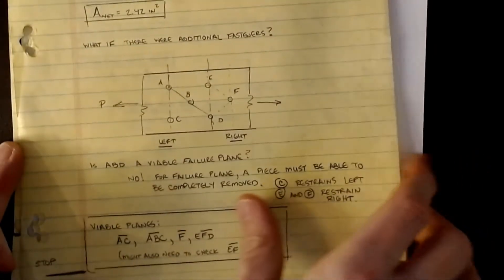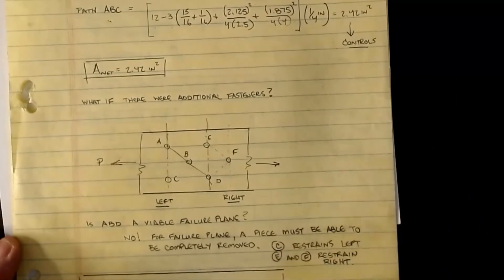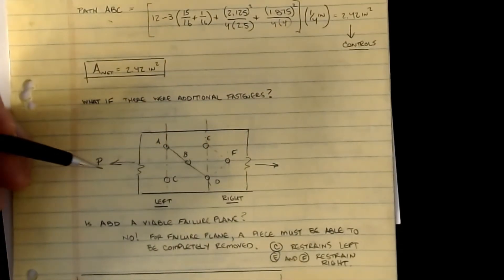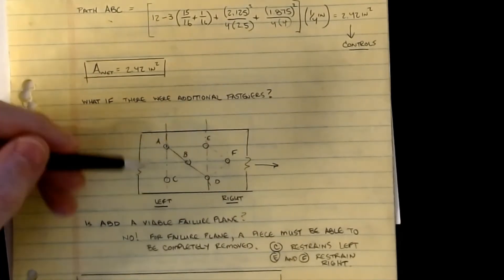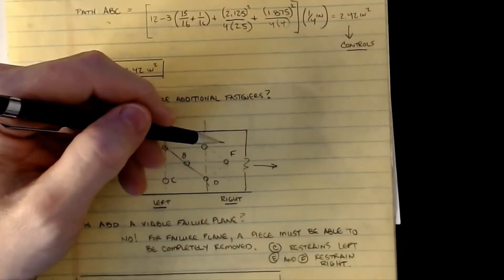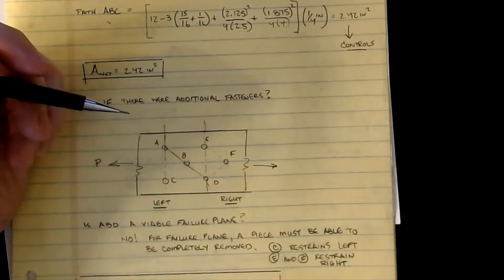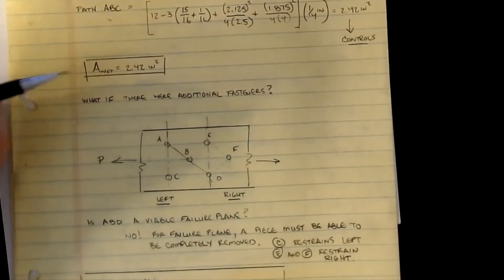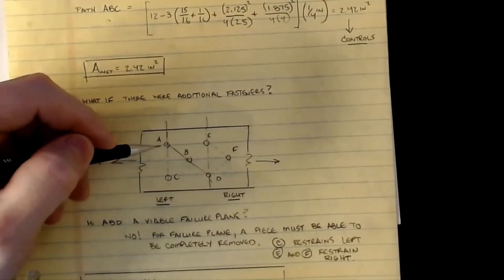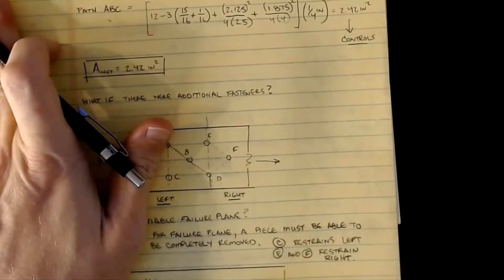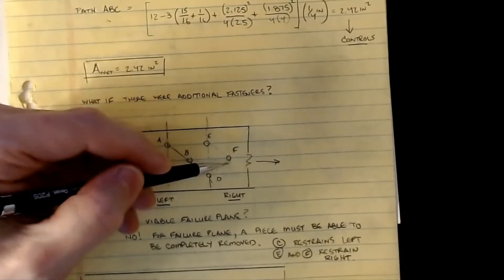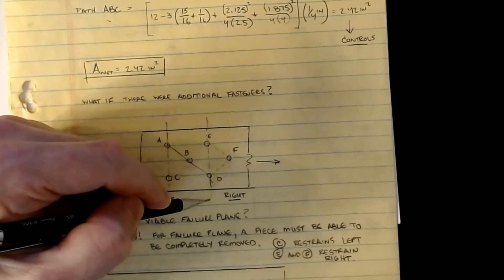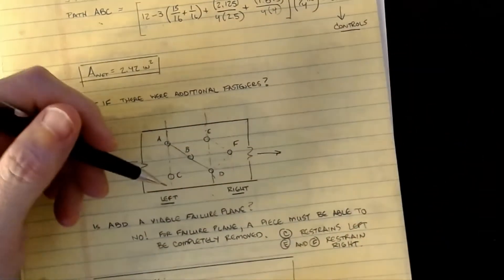What if there were additional fasteners? If pulling from the left and I add a bolt at E and a bolt at F, what are the paths? From the left, it's still ABD and AD. But from the right, now we got to figure out what paths could happen. The planes we're going to look at for the net fracture case would be an AC value, an ABC which would allow me to separate the left half, then F, and a plane EFD which would separate this and allow me to pull the right half, depending on which way we're looking at applying the load.